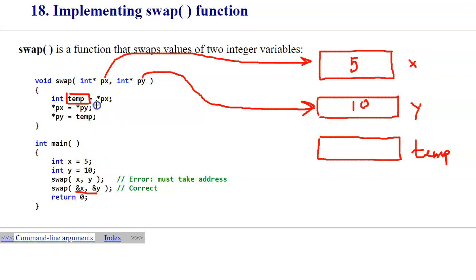The asterisk in front of PX is a dereference operator which allows the pointer to access the actual value of X. Obviously, the first step in this swap algorithm that we're implementing is taking X and assigning its value to the temporary variable that we create.